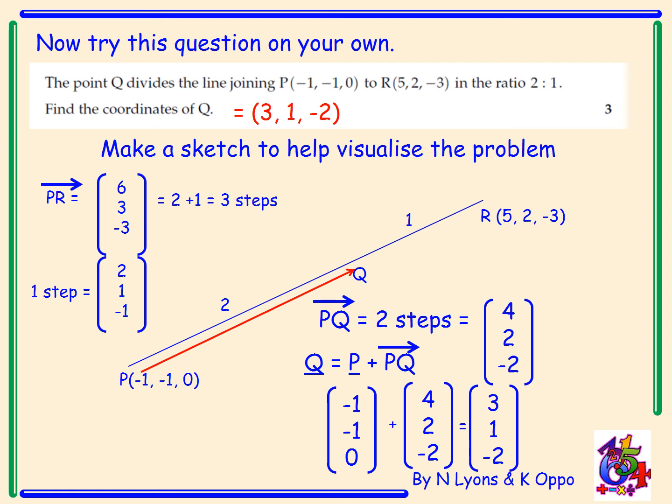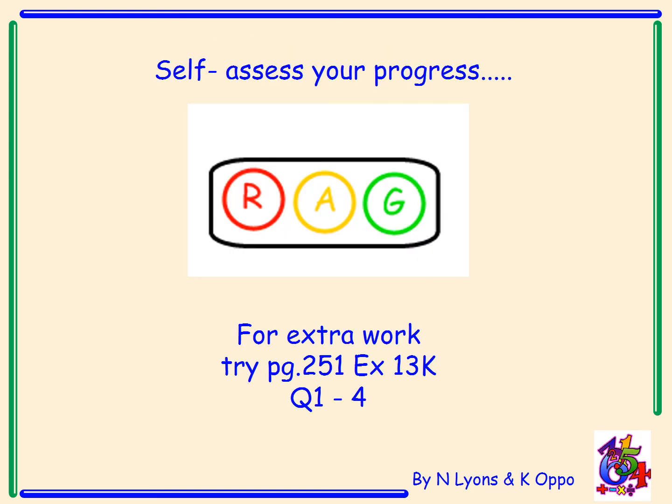So why don't you have a look over your answer and self-assess how did you get on? Did you get it all right? Are you green? Good to go? Maybe a few mistakes. Still have to go back over a few more examples. Or red if you're really struggling with this. And please see me as soon as you can. You can put me in pause if you want to finish copying this down. Otherwise, we're going to go ahead. So self-assess your progress. Red, amber or green? Now be honest with yourself. If you need help, you have to ask. Now for extra work, you could try page 251, exercise 13k, and just try questions 1 to 4.